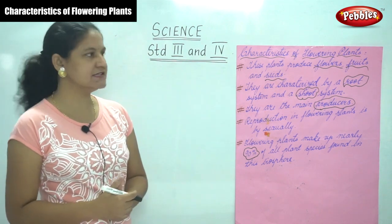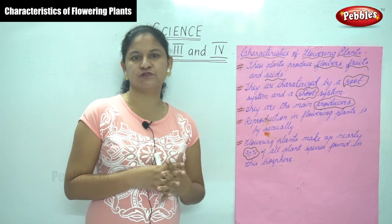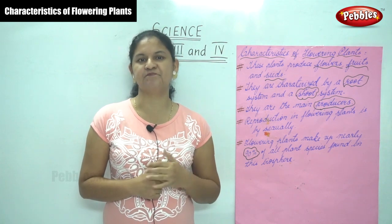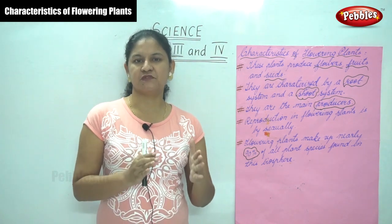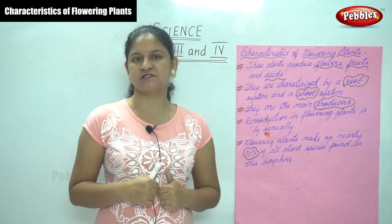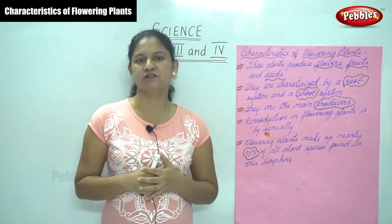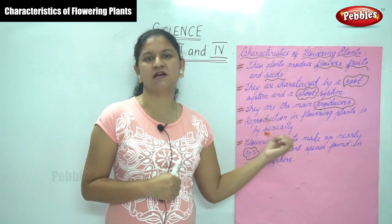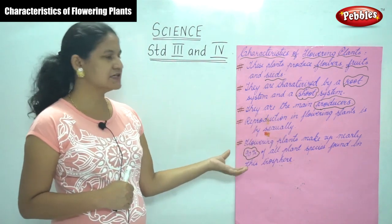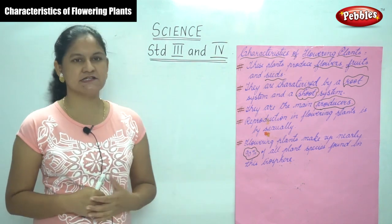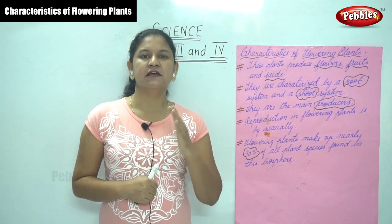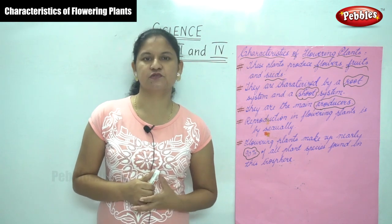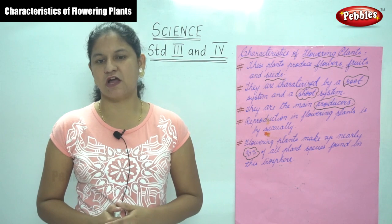To summarize, the characteristics of flowering plants are: first, they produce flowers, fruits, and seeds; second, they are characterized by a root system below the ground and a shoot system above the ground; third, they are the main producers; fourth, reproduction is done sexually; and fifth, flowering plants make up nearly 90 percent of all plant species on earth.